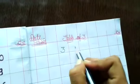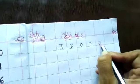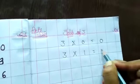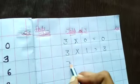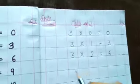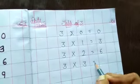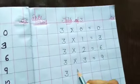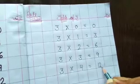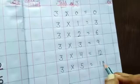Three zeroes are zero. Three ones are three. Three twos are six. Three threes are nine. Three fours are twelve. Three fives are fifteen.